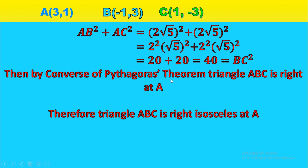To prove it's right at A, we apply the converse of Pythagoras theorem. AB² + AC² = (2√5)² + (2√5)² = (4 × 5) + (4 × 5) = 20 + 20 = 40. This equals BC² = (2√10)² = 4 × 10 = 40. Therefore by the converse of Pythagoras theorem, triangle ABC is right at A, since BC is the hypotenuse. So triangle ABC is right isosceles at A.